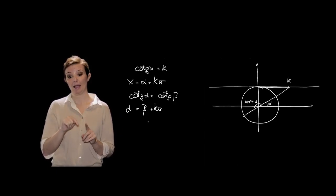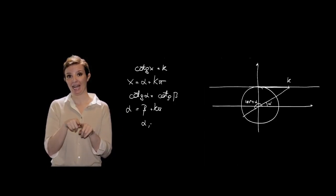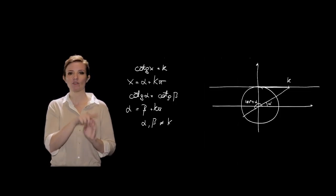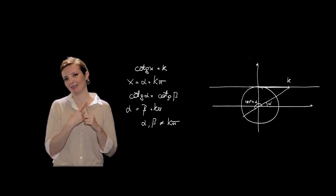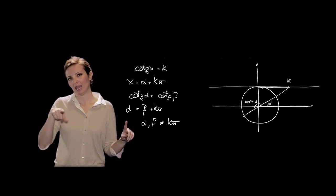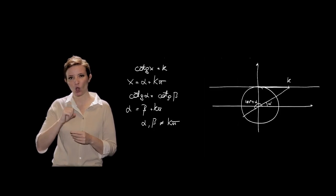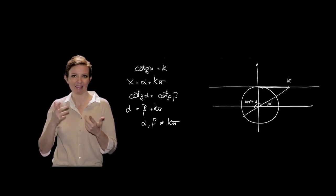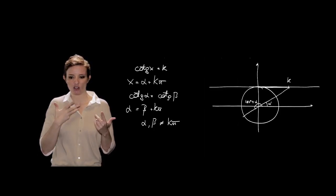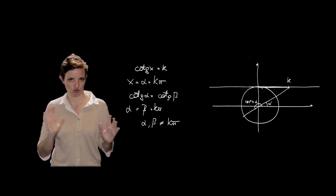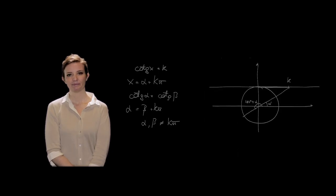Con α e β diversi da kπ, che sono i valori in cui la cotangente non assume valori reali.